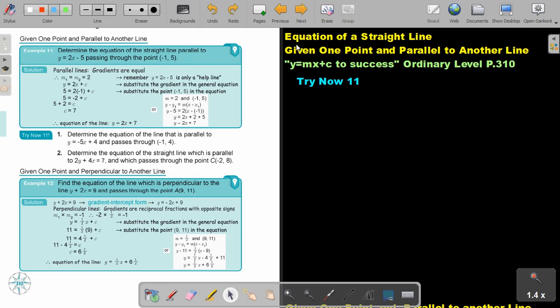In this video, we are going to continue with how to find the equation of a straight line. They will give you one point and parallel to another line. You will find this on page 310 in the Namibia Ordinary Level Mathematics textbook, y equals mx plus c2, success.